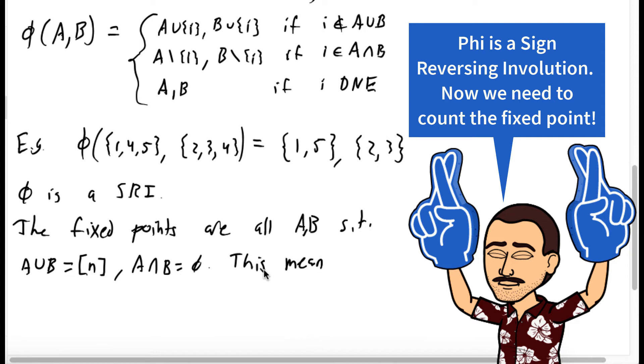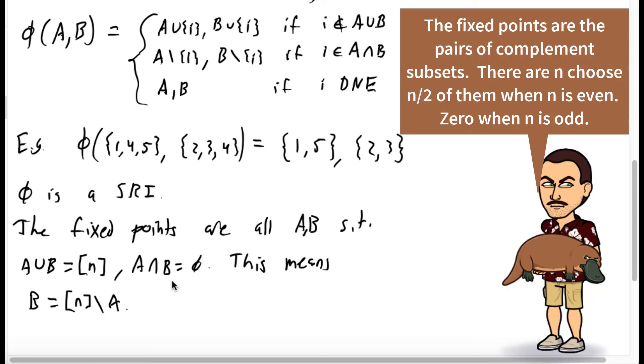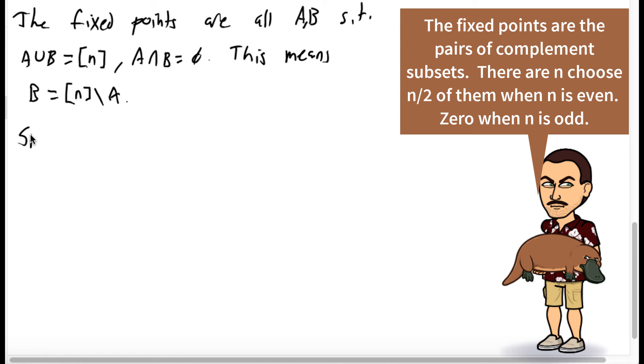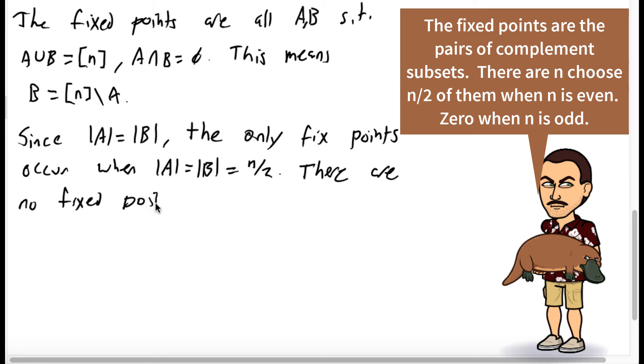So what does this mean? This means that B is exactly n without A. They're complements of each other. And so now the question is, can we count the number of such pairs of subsets? Well, since A and B have the same size, and we need them to be complements of each other, the only fixed points occur when the size of A and the size of B are equal to n over 2. Since they're the same size and they should contain every single element, it only happens when they're half of the size of n.